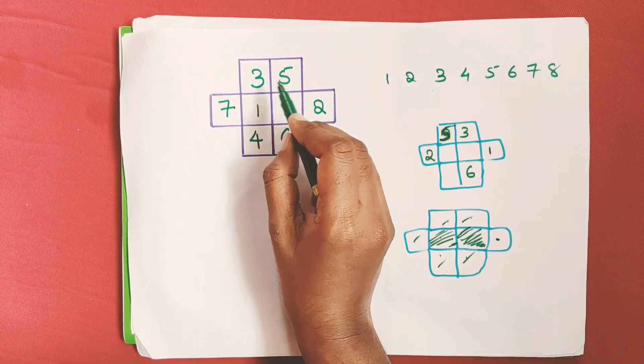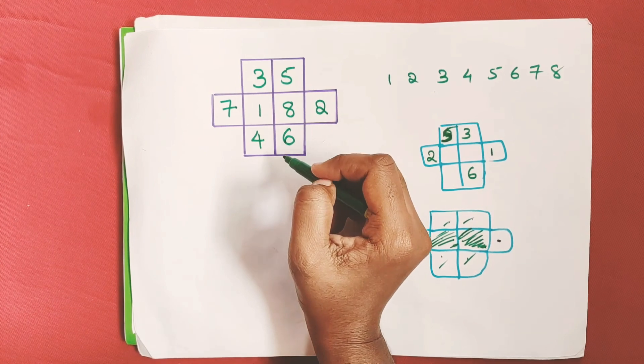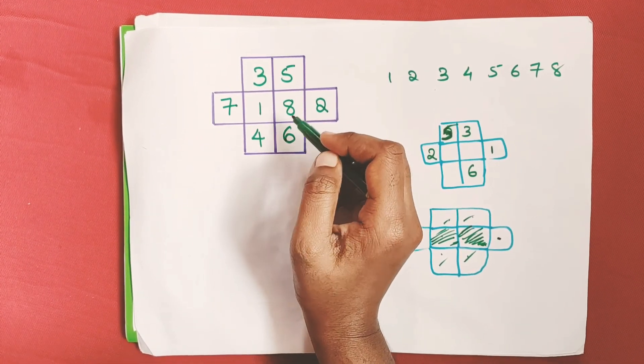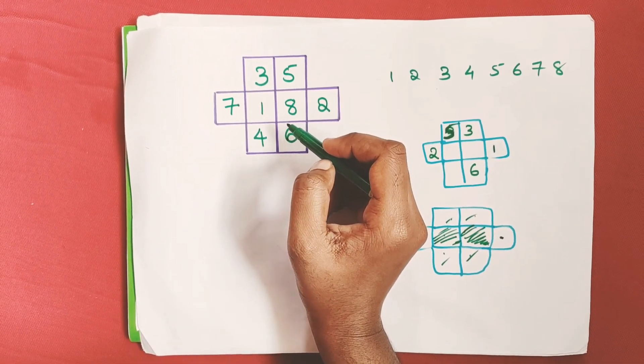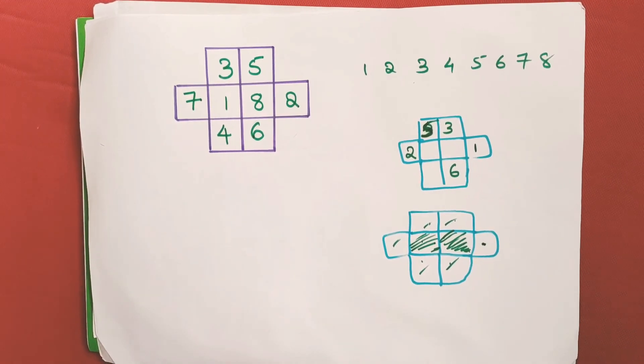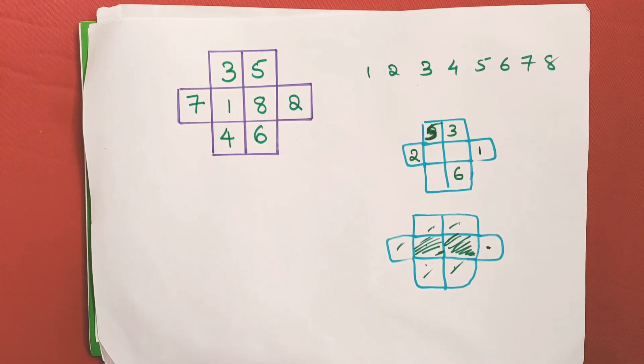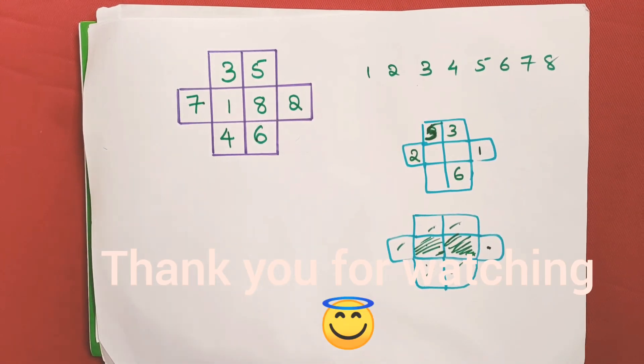1, 2, 3, 4, 5, 6, 7, 8 - none of the numbers are touching an adjacent number, so our puzzle is solved. If you have any doubts, please put them in the comment box. If you like the video, don't forget to like and subscribe. Thank you for watching.